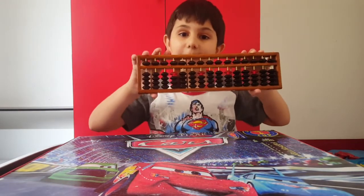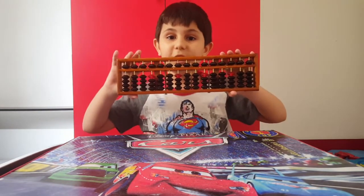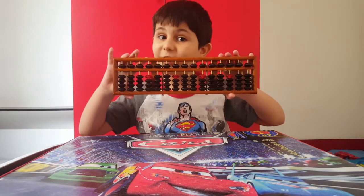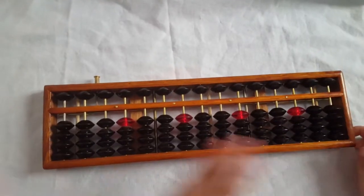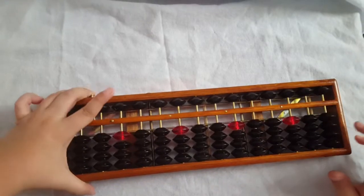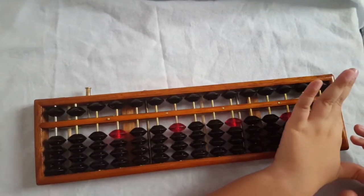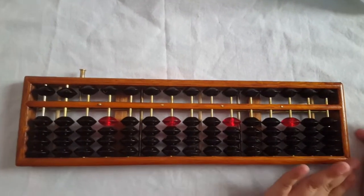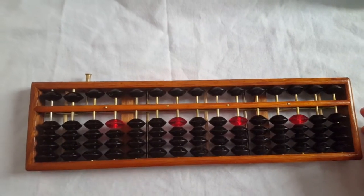This is an abacus. It's a tool used to solve math. In this abacus, we have beads. The upper beads represent five, and the lower beads each represent one.